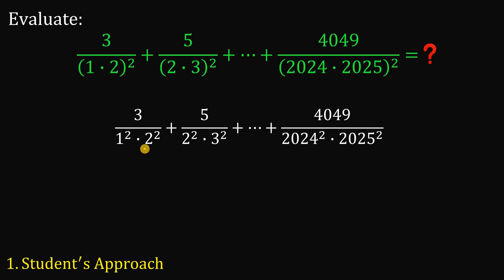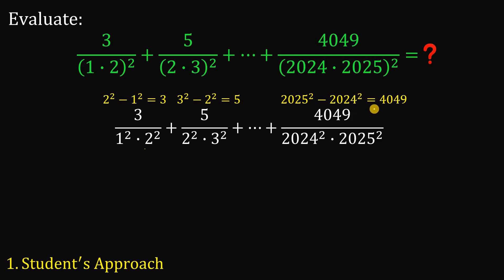We see that 2 squared minus 1 squared, or 4 minus 1, is 3. Now 3 squared minus 2 squared, or 9 minus 4, is simply 5. The pattern continues because 2,025 squared minus 2,024 squared is equivalent to 4,049. This is not hard to see: using the difference of two squares, we factor to get (2,025 + 2,024)(2,025 − 2,024), which equals 4,049 times 1, or simply 4,049.